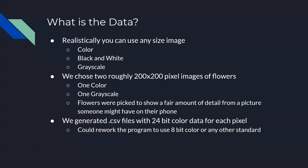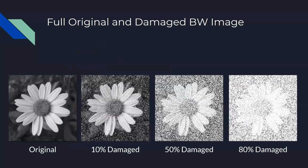We use these photos to generate two CSV files with 24-bit color data for each pixel, but this could be reworked to use any standard like 8-bit color. Here we have our examples of the original image on the left through 10, 50, and 80 percent damage.